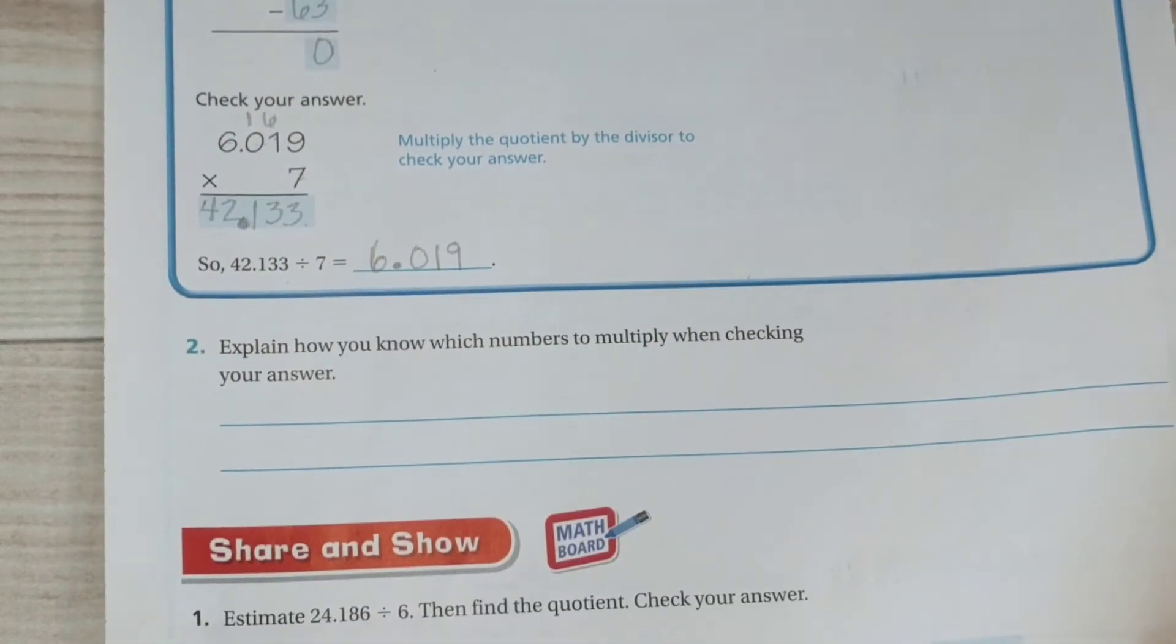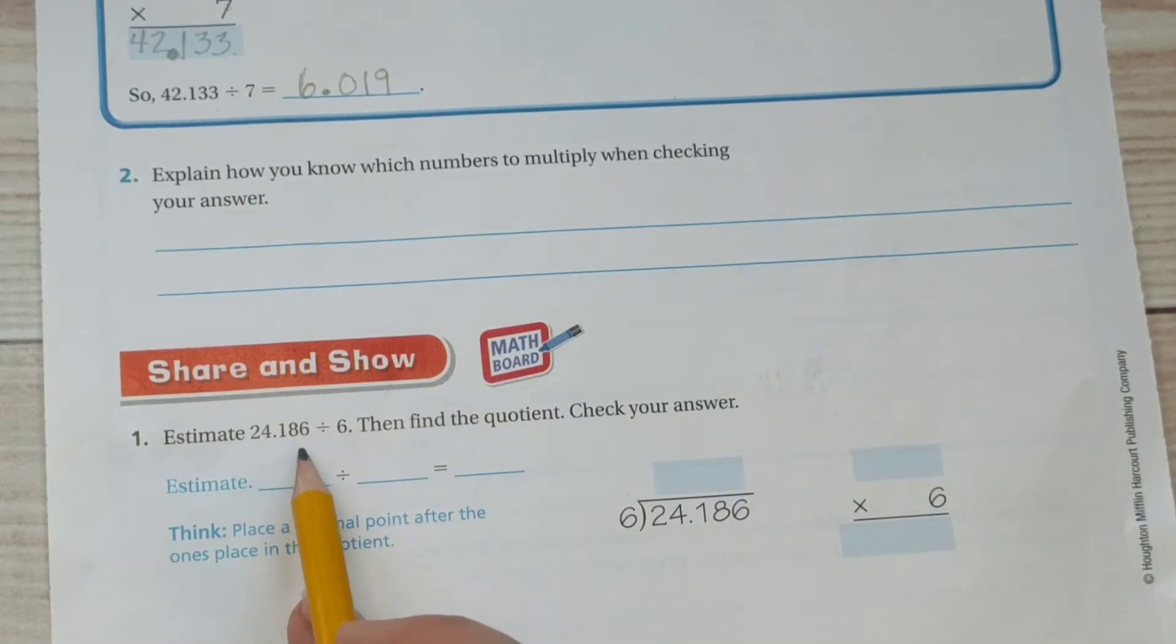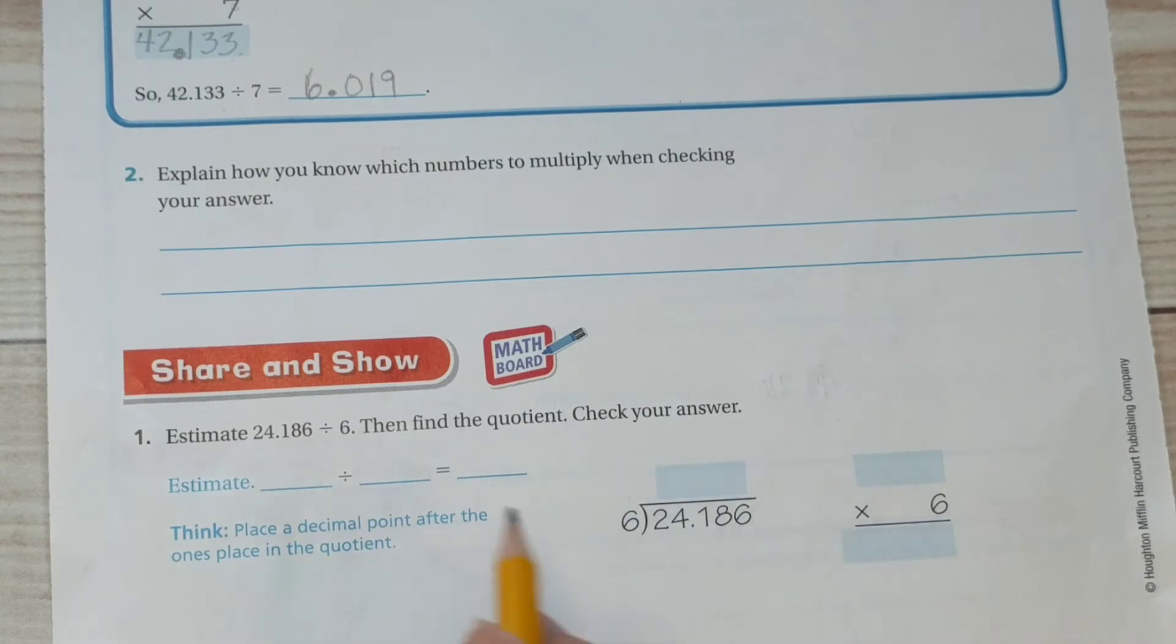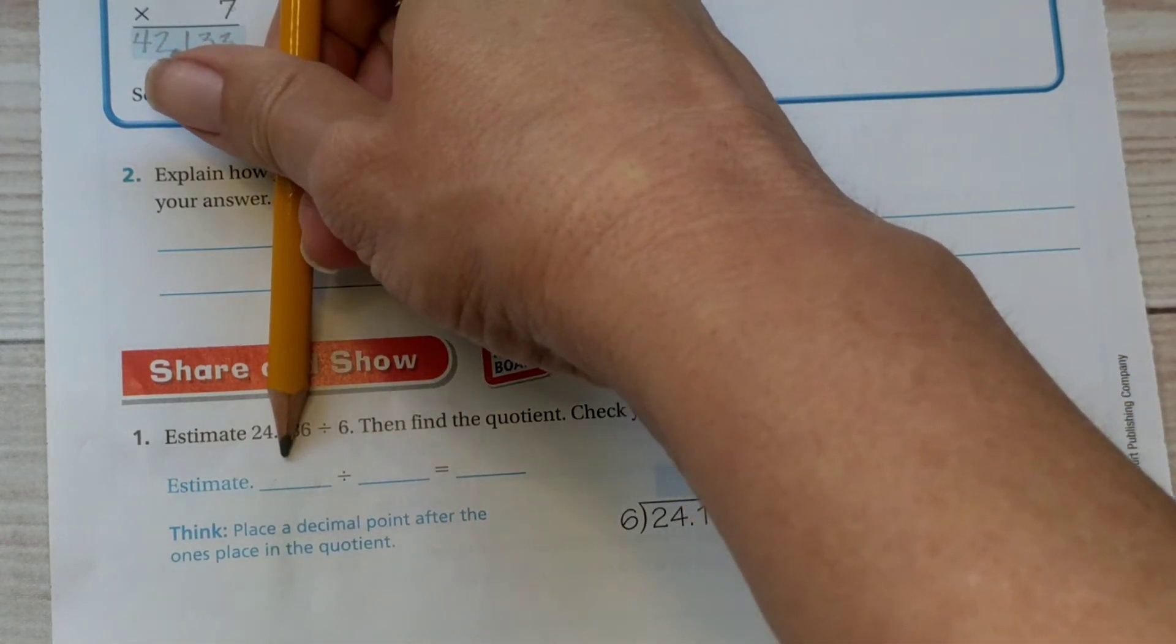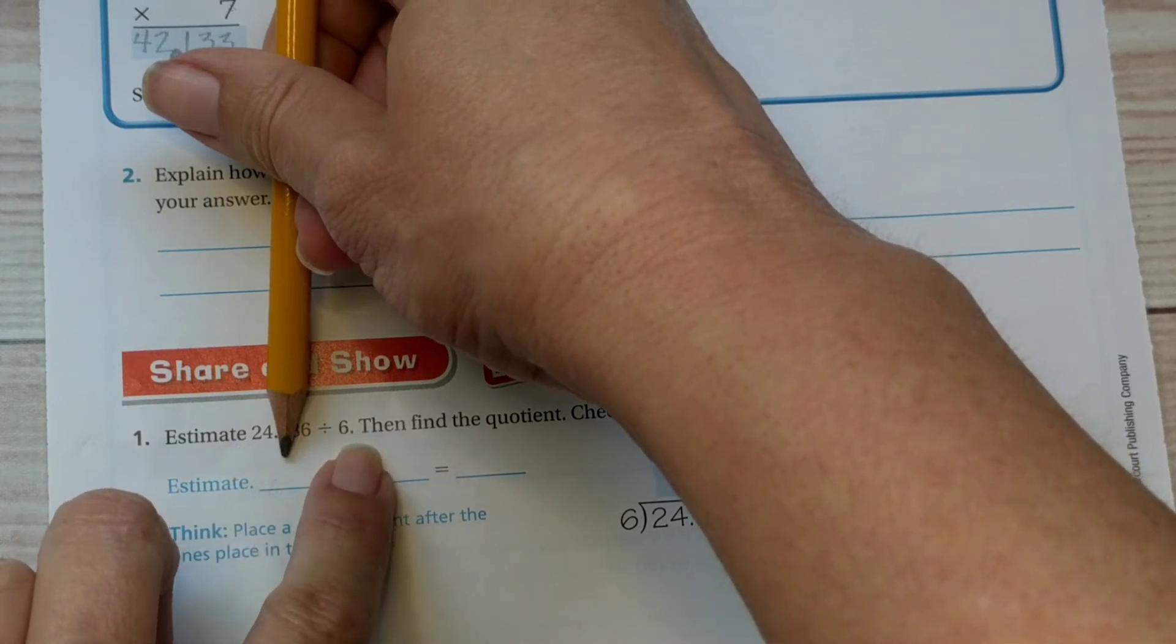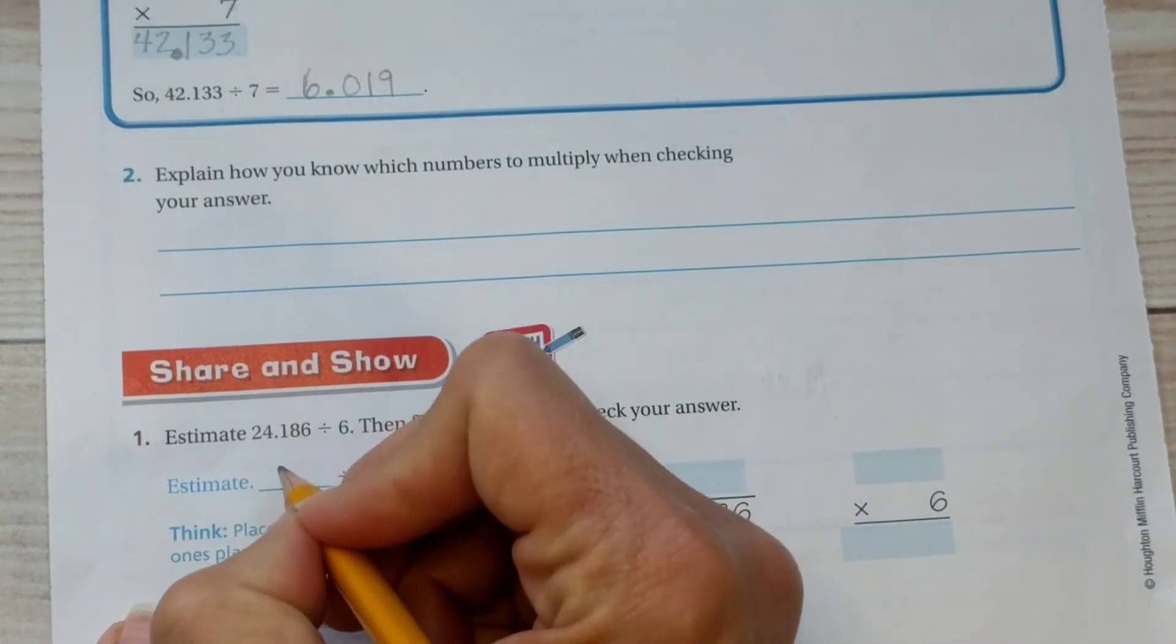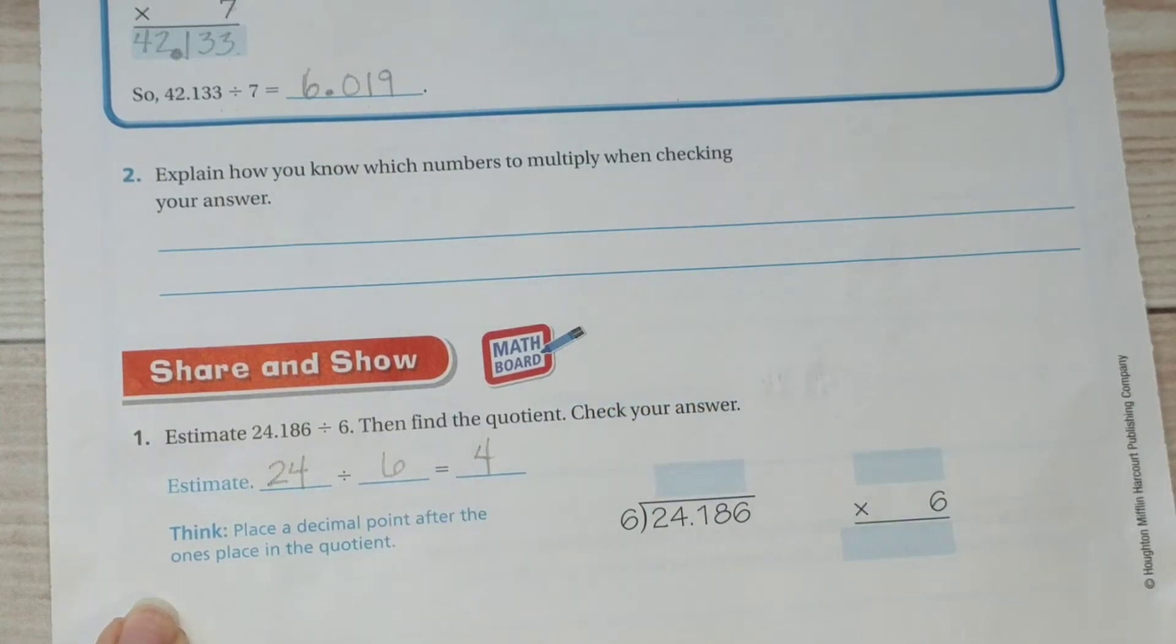Let's do one more at the bottom. We have twenty four and one hundred eighty six thousandths divided by six. Then we're going to find the quotient, check your answers by multiplying at the end. We're going to start by estimating. Let's take a look at these two numbers. We don't want a decimal in our estimate. So, let's take a look at, we've got twenty four and six. Well, that's easy, isn't it? We're just going to leave it twenty four and six, because six does go into twenty four. Twenty four divided by six is four. So, our final answer should be in the ballpark of four.